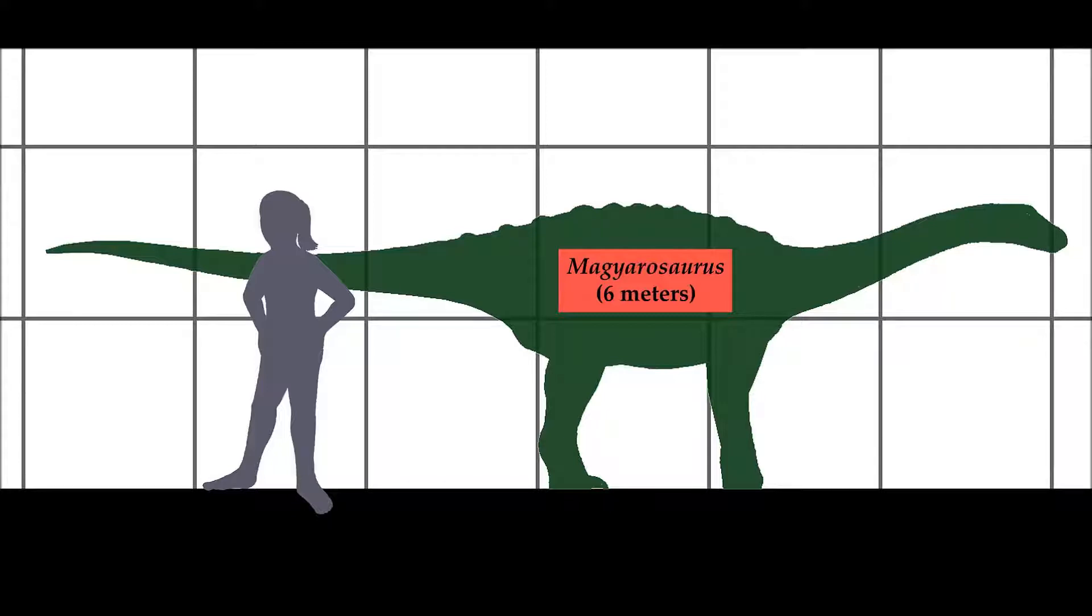sauropod dinosaurs were the largest land animals in the history of our planet. These dinosaurs have characteristic long necks, long tails, small heads, and huge bodies which commonly weighed over 65 metric tons. The Apatosaurus and Titanosaur are a couple of these famous giants.